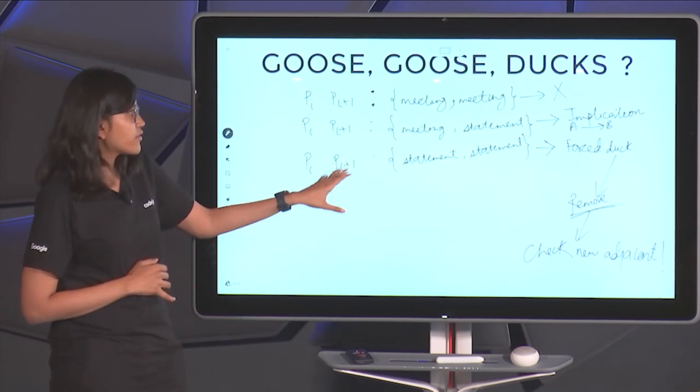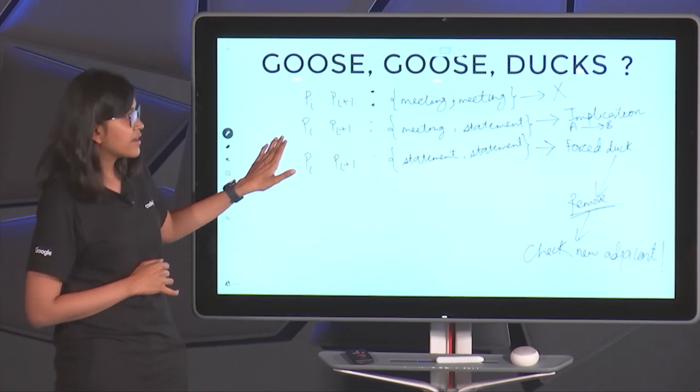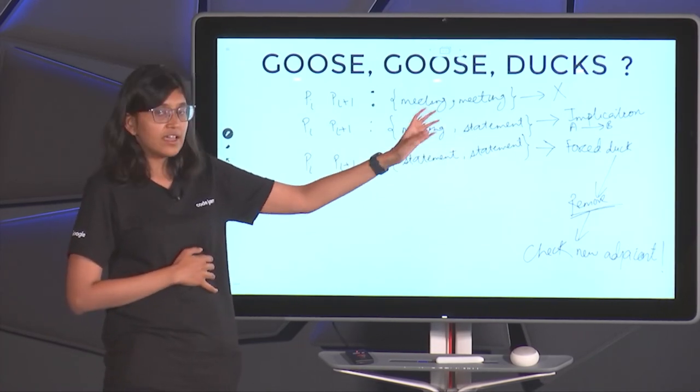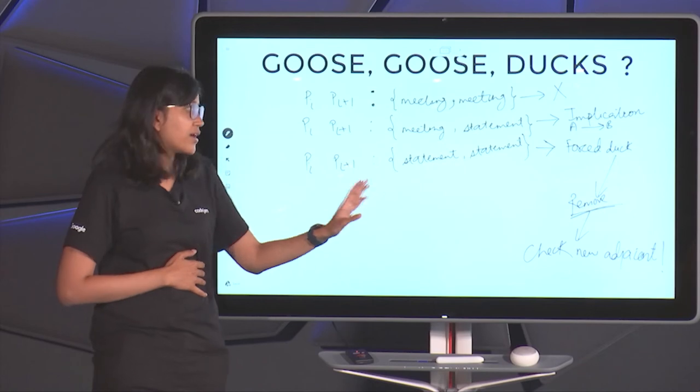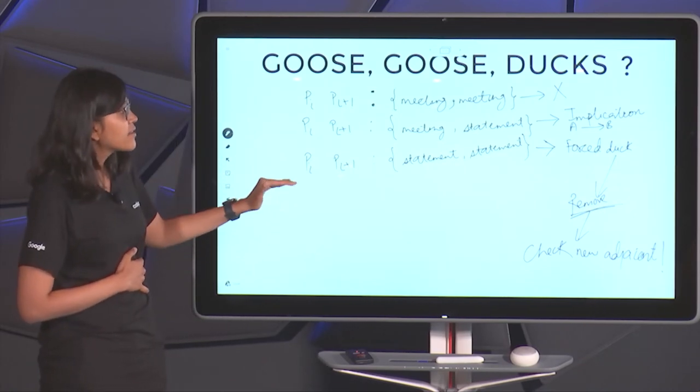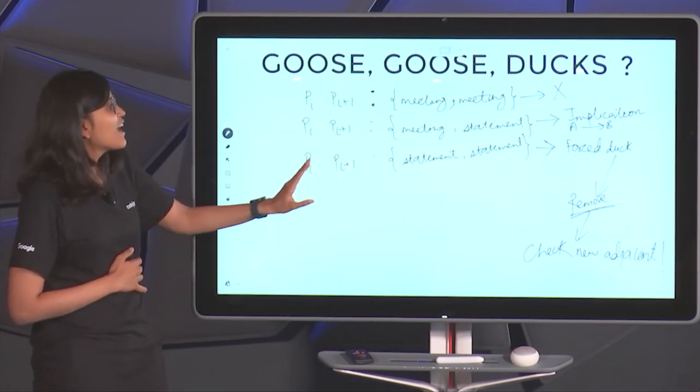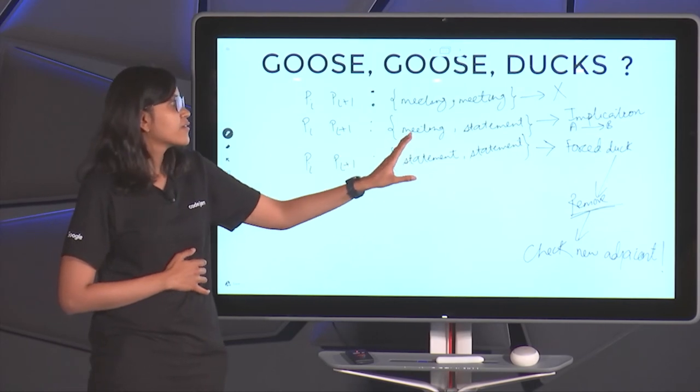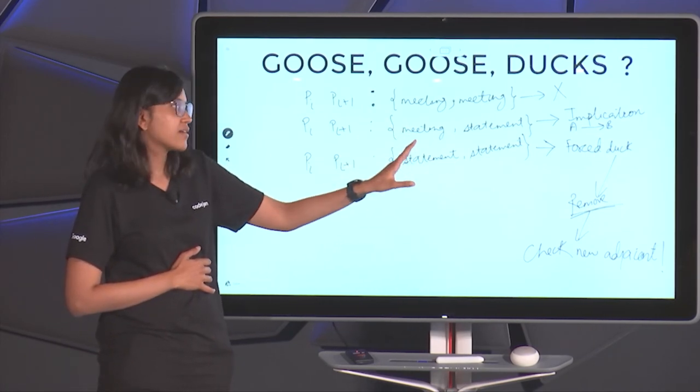So here, based on that, if we have the second case, then this implies that if A is a duck, then B is also a duck. And in the second case, sorry, and in the third case, it's a case that we know for sure that it's a forced duck.